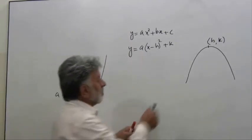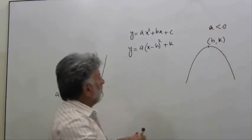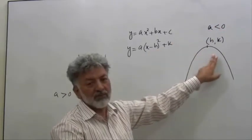And if a is negative, then (h, k) will be a maximum value.